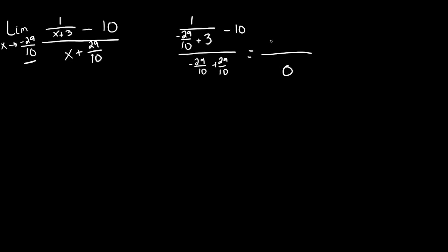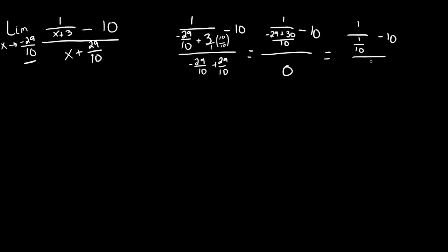Let's see what our numerator works out to be. In this first fraction, this complex-looking thing right here, let's take care of getting this denominator to be just one fraction. To add these two together, we need to get a common denominator, which in this case is going to be 10. So we're going to end up multiplying that 3 by 10 to give us a denominator of 10. We found our least common denominator to be 10. Negative 29 plus 30 is just 1, so we have 1 over 1 over 10, minus 10 over 0.